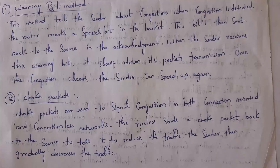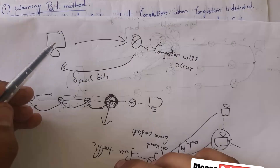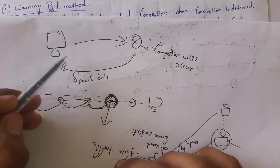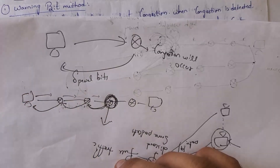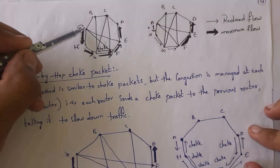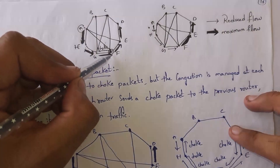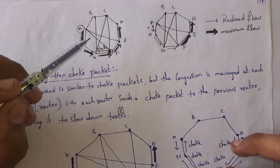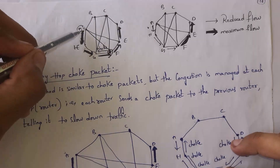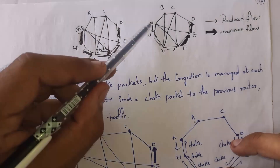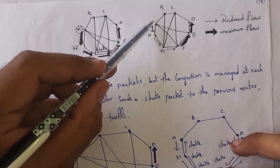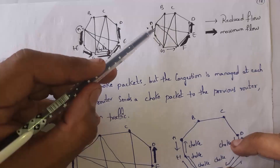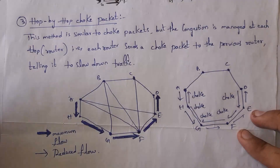The next method is the choke packet method. The choke packet method is similar to the warning bit method, except that instead of sending a warning bit, a choke packet is sent to the sender. Whenever the computer receives a choke packet, it will send data slowly to avoid congestion. In this diagram, the router is sending data very fast. Whenever congestion occurs for router F, router F sends a choke packet to router A to slow down data transmission. Whenever router A receives the choke packet, it sends data slowly, resulting in reduced flow.